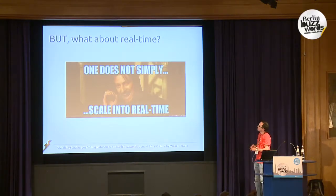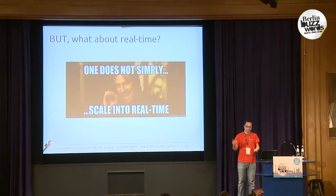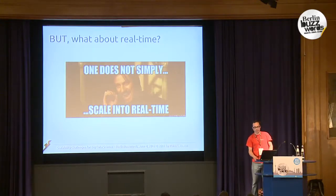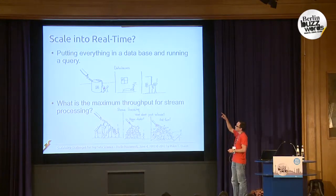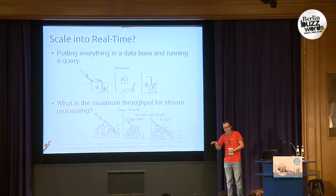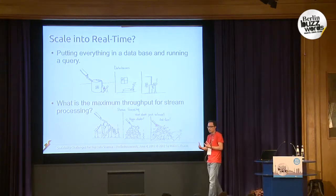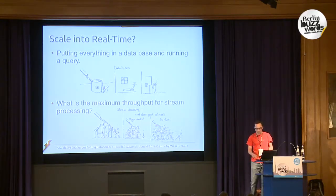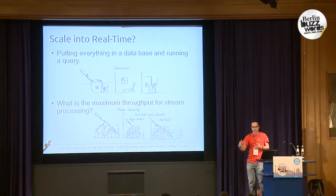What about real time? People often believe that you just need more nodes — take Hadoop and at some point it will be fast enough for real time. But one does not simply scale into real time. Real time is not really a scaling problem; you need a different algorithmic approach. The problem with databases in a real-time scenario is that it always takes some time to compute the result, and the database gets slower and slower as more data accumulates.